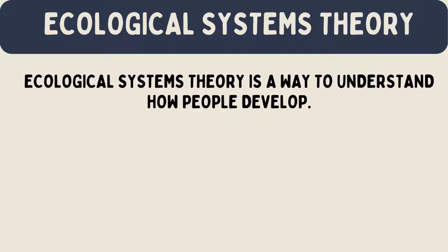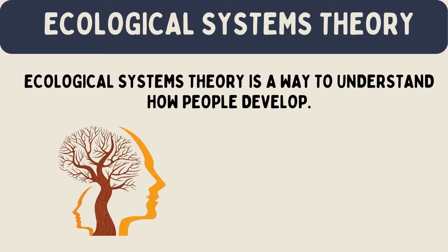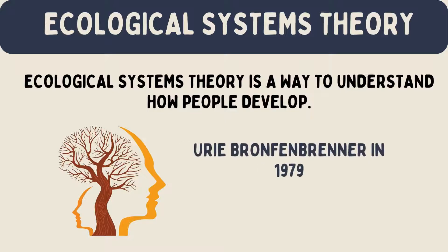Ecological systems theory is a way to understand how people develop. It was created by a psychologist named Uri Bronfenbrenner in 1979. This theory explains how different environments affect a person's growth and behavior.